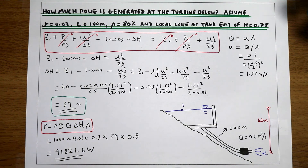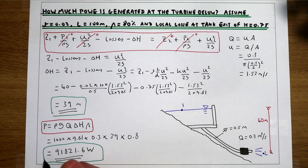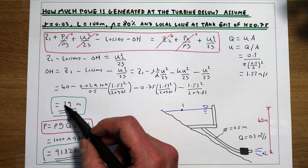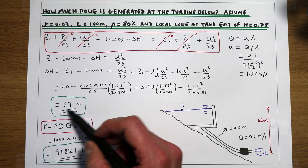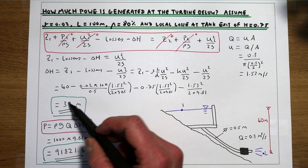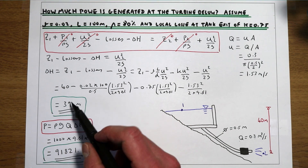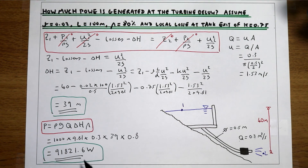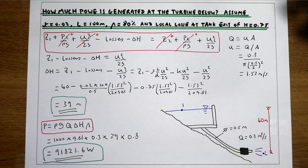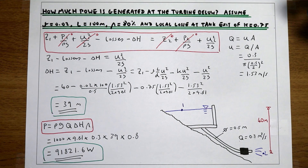So what we're saying here is that this turbine is extracting 39 metres of pressure head from the system and converting that into 91,821.6 watts — and that is the answer for how much power this turbine is generating from this reservoir of water.